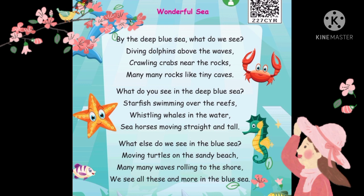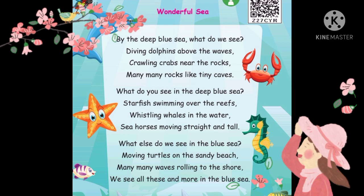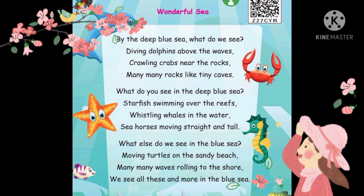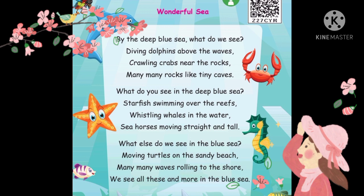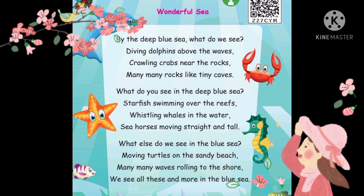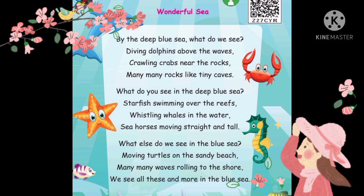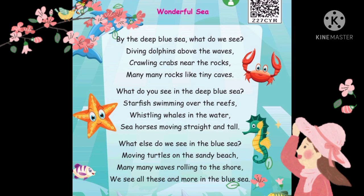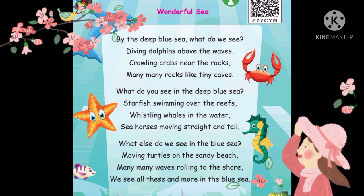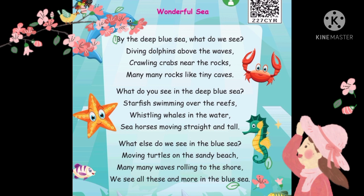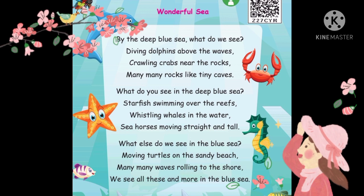By the deep blue sea, what do we see? Diving dolphins above the waves. Crawling crabs near the rocks, many many rocks like tiny caves. What do you see in the deep blue sea? Starfish swimming over the reefs, whistling whales in the water, sea horses moving straight and tall.